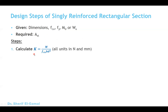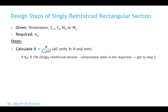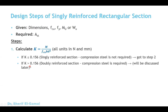Step one: calculate k equals M ultimate divided by Fcubd squared, with all units in Newtons and millimeters. If the moment is given in kilonewton meters, multiply by 10 to the power 6 to convert to Newton millimeters. Then check: if k is less than or equal to 0.156, it is a singly reinforced section with no compression steel — proceed to step two. If k is greater than 0.156, it is a doubly reinforced section requiring compression steel, which will be discussed in a coming video.